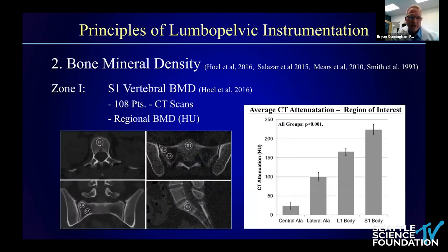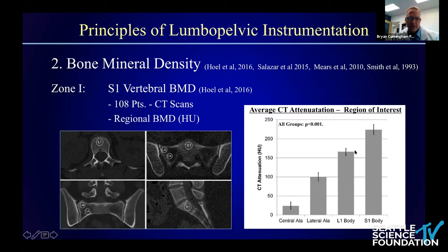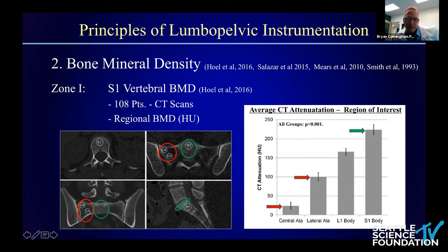The second principle relates to bone mineral density. A study by Drs. Polly and Hull, published in 2016, looked at S1 vertebral bone mineral density in 108 patients using CT attenuation with the L1 vertebral body as control. The central ala and lateral regions demonstrated a marked decrease compared to L1 — almost a haloing effect at S1. However, the S1 vertebral body, anteriorly and along the midline and superior end plate, showed a significant increase over the L1 vertebral body.